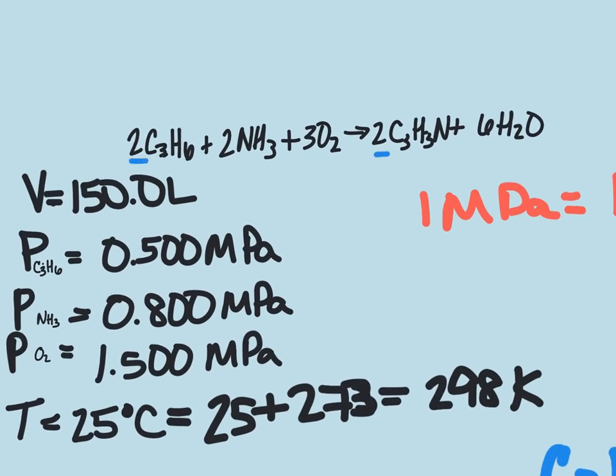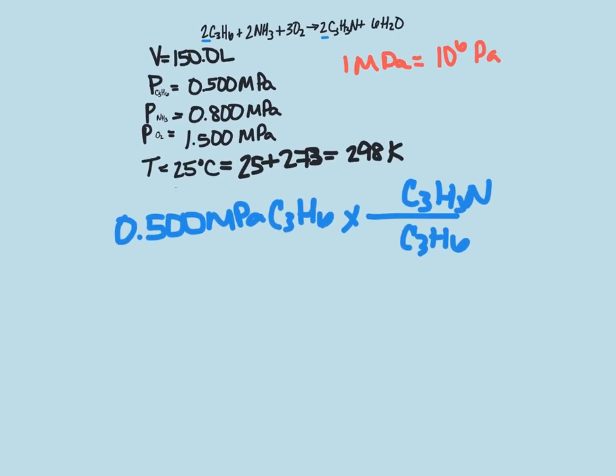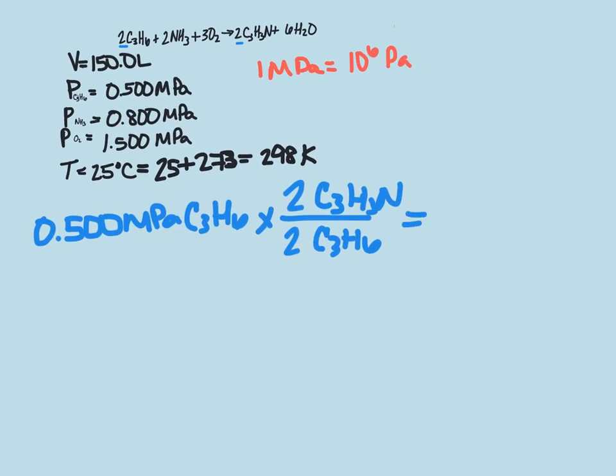Looking at the balanced equation, we can see that it's 2 to 2, or we could also say that's 1 to 1, but we'll put 2 to 2 there. This means that for this pressure of the C3H6, we'll also have 0.5 megapascals for our C3H3N.